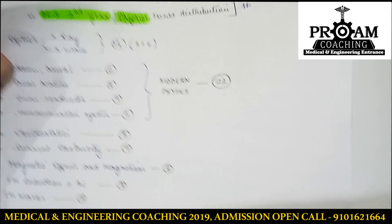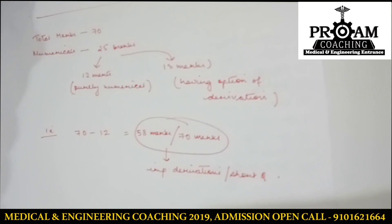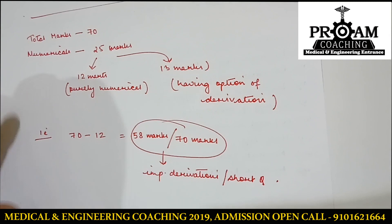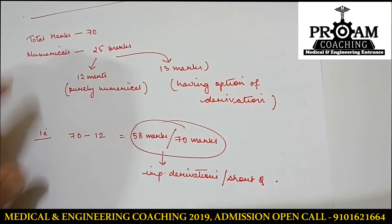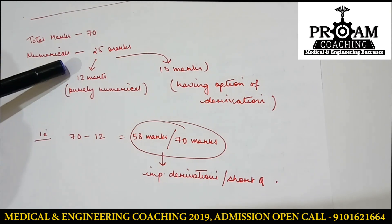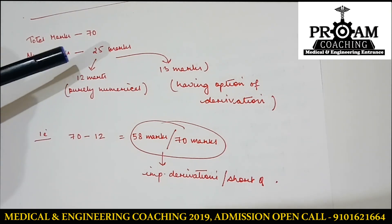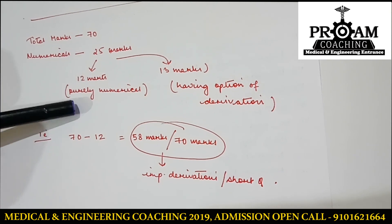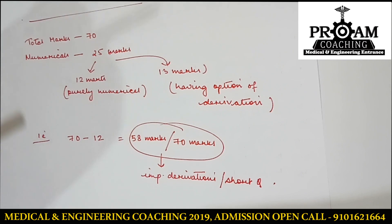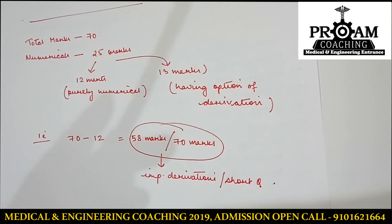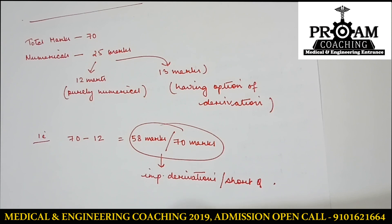Now let's see some important strategies for preparation. Total marks are 70. From the previous years' statistics, the numerical portion consists of 25 marks. Out of those 25 marks, 12 marks are purely numerical, and the remaining 13 marks of the numerical portion have important options for derivation as well.